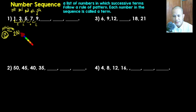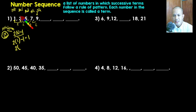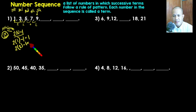Since two times one gives two, we subtract one to get one. Let's try this for the first term: two times one minus one equals one — that is our first term. For the second term, substituting n equals two: two times two minus one equals four minus one, which is three. We got the second term, three.